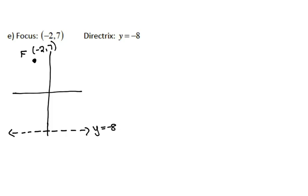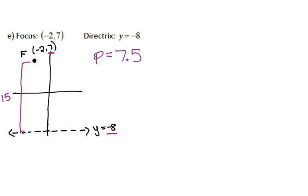Your vertex is smack in the middle of your focus and your directrix, so I need to figure out where my vertex is. First I'll figure out the distance from my focus to my directrix — I'm going from a y of negative 8 to a y of 7, which is a distance of 15 units. That entire distance is 15 units, so if I cut that in half, 15 divided by 2 is 7.5. That is actually what my p is, since the full distance from focus to directrix equals 2 times p.